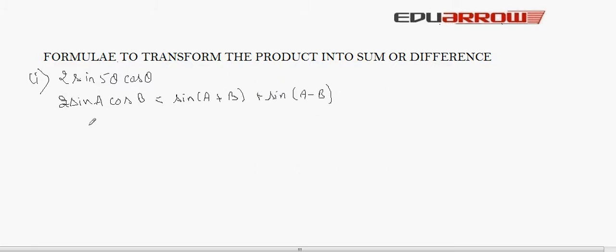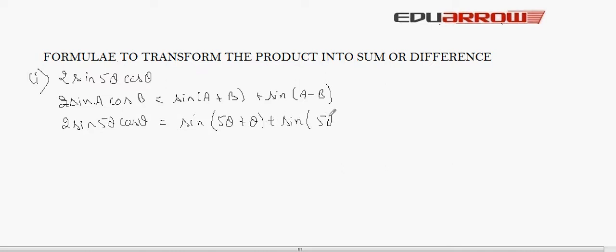Applying this formula, 2 sin5θ cos4θ becomes sin(5θ+4θ) plus sin(5θ−4θ), which gives us sin6θ plus sin4θ... that is sin9θ plus sinθ. This is the required answer. Similarly, we can convert other products into a sum or difference of two trigonometric functions.